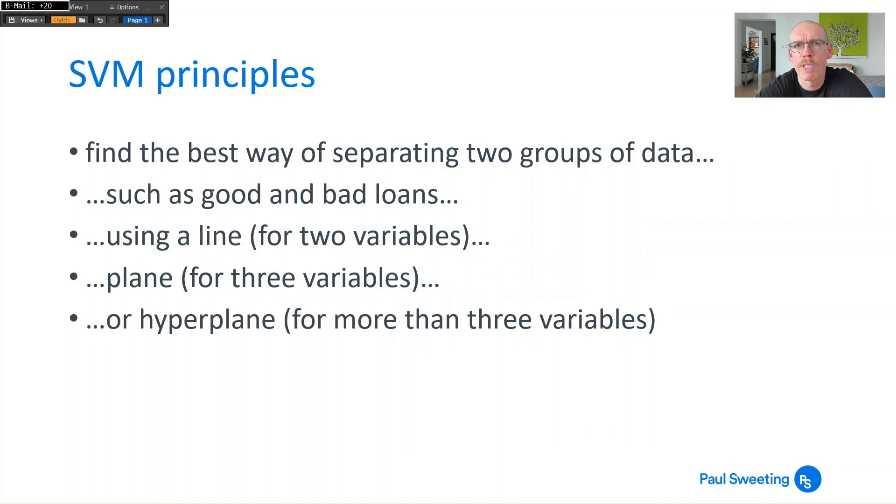So the broad principle of support vector machines is you're trying to find the best way of separating two groups of data such as good and bad loans using a line if you've got two variables. If you've got three variables that line becomes a plane, if you've got more than three variables it becomes a hyperplane.